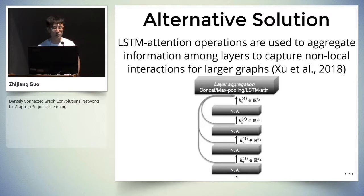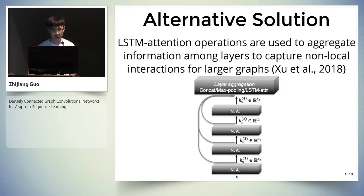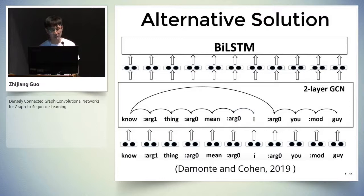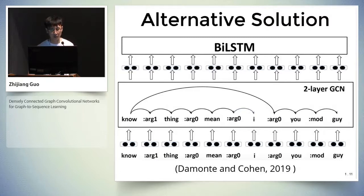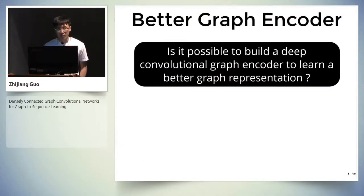There are many existing approaches to solve this issue. One alternative solution is to apply an LSTM attention operation to aggregate information among layers, enabling stacking of many graph convolutional layers. Another alternative solution is to attach an additional bidirectional LSTM after a two-layer GCN model for better graph representation. This leads to the second question: these approaches rely on recurrent architectures — is it possible to use a purely convolutional architecture with more layers to learn a better graph representation?